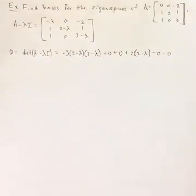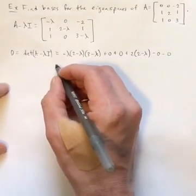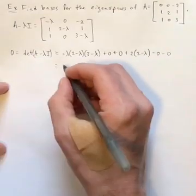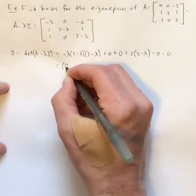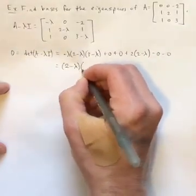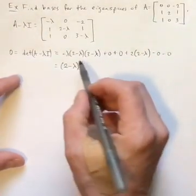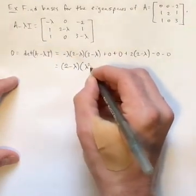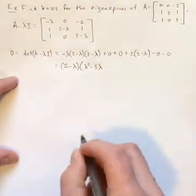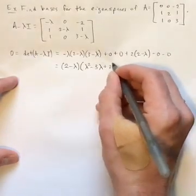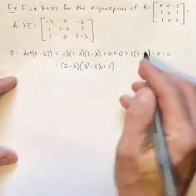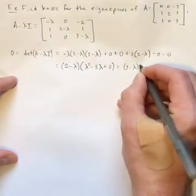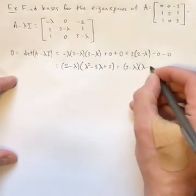Now, this is a cubic, but rather than me multiply it out and collect like terms, you'll notice that of all the non-zero terms, there is a common 2 minus lambda in there. So I might as well factor that out. So now I can do negative lambda times 3 minus lambda plus 2, because that's what's left over. And of course, you should recognize that one. That one's easy to factor as well. It's lambda minus 1, lambda minus 2.